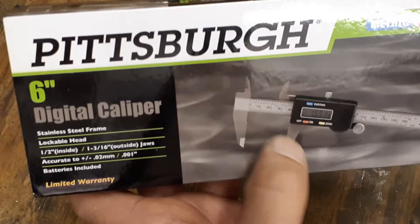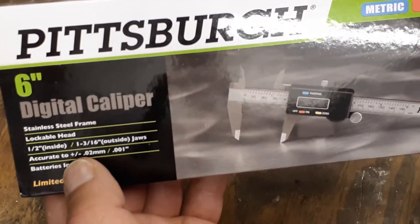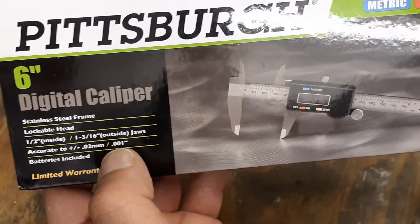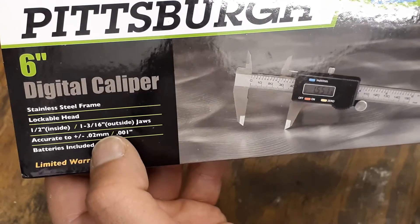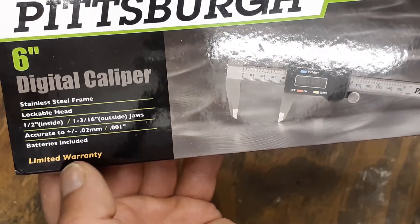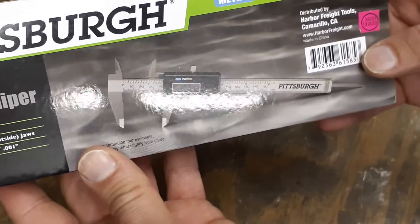So these are the jaws here, and I guess that's the measurements of them. And then it says accurate up to plus or minus one thousandth of an inch or 0.02 millimeters. The batteries are included and the back of it basically says the same thing on the back.